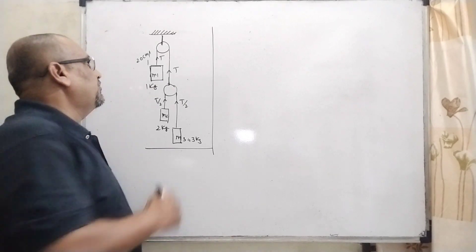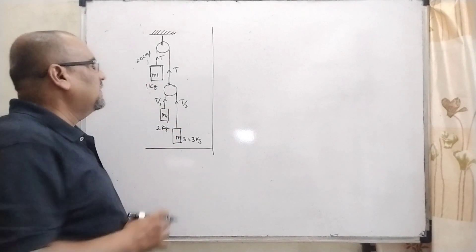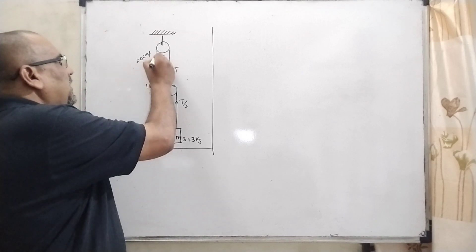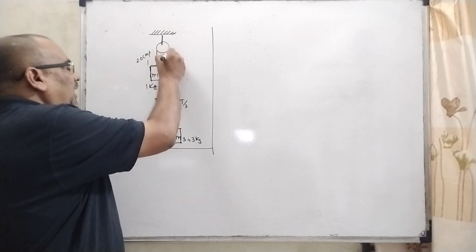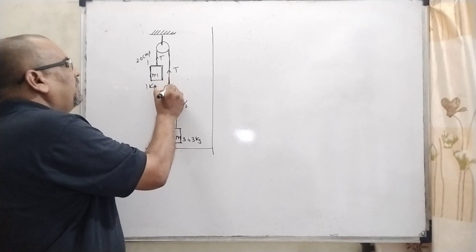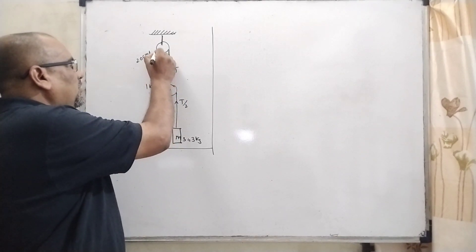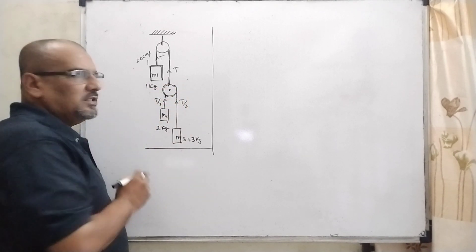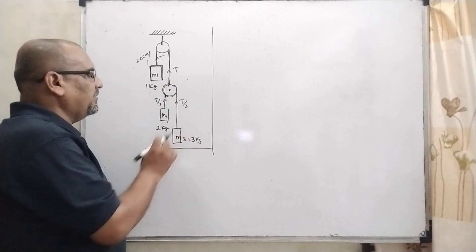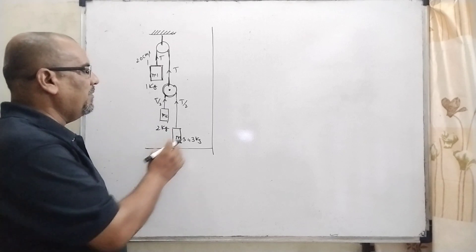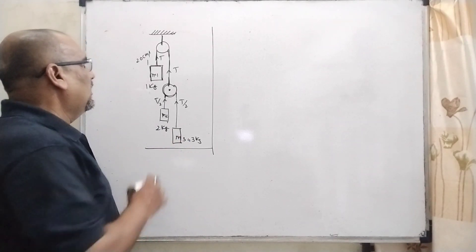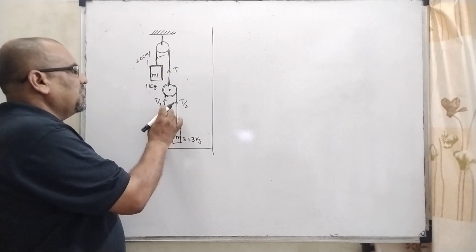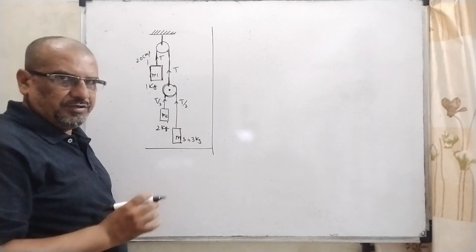Let us first understand what the question says. Here you are given M1, its mass is 1 kg. It is connected with a string and this string is connected with a pulley. This is the first string. This pulley is connected with two other blocks, M2 and M3, having masses 2 kg and 3 kg respectively. We have to find out the acceleration of M1, acceleration of M2 and acceleration of M3.